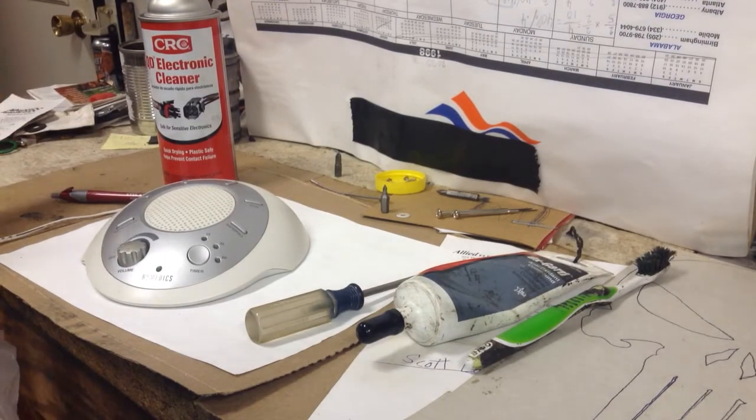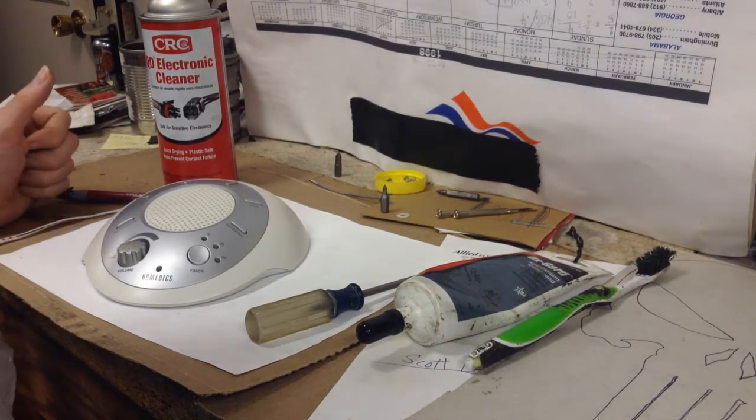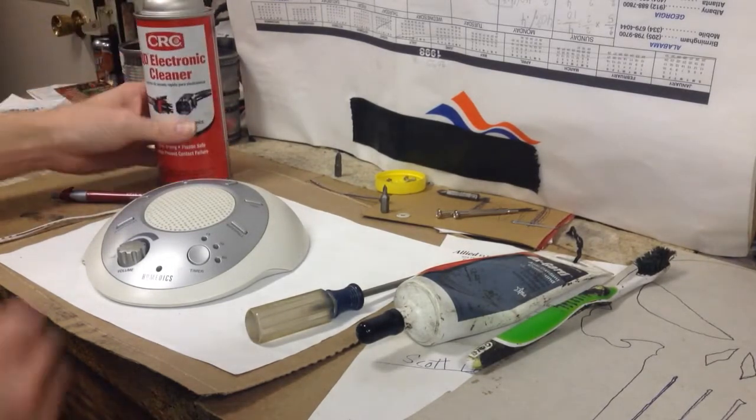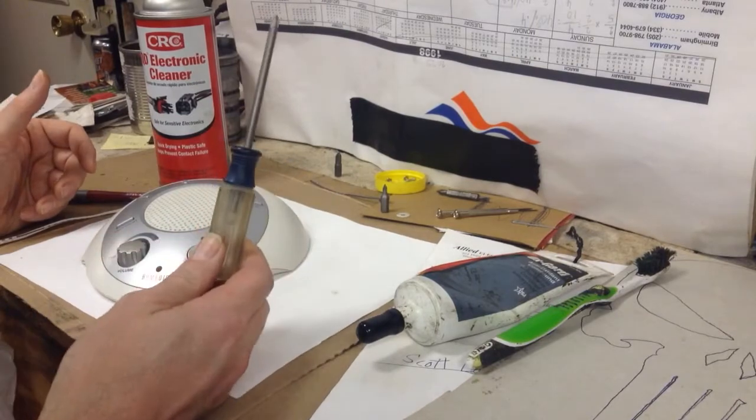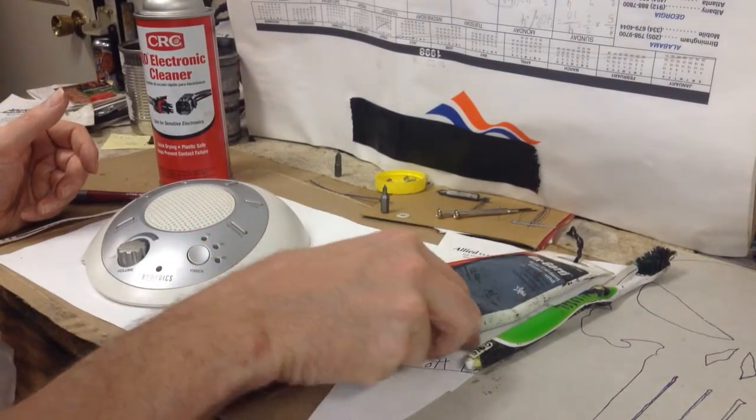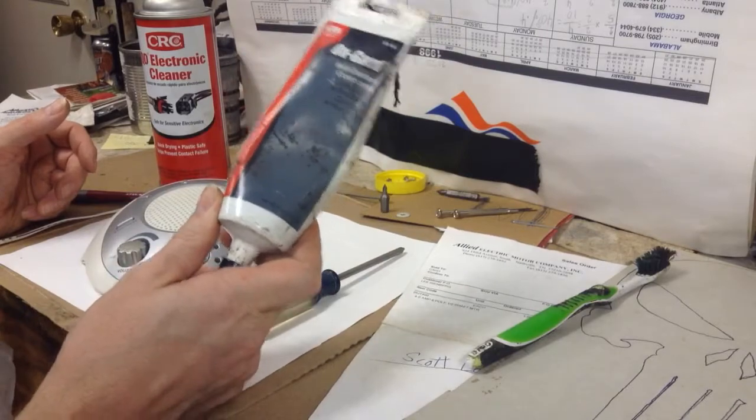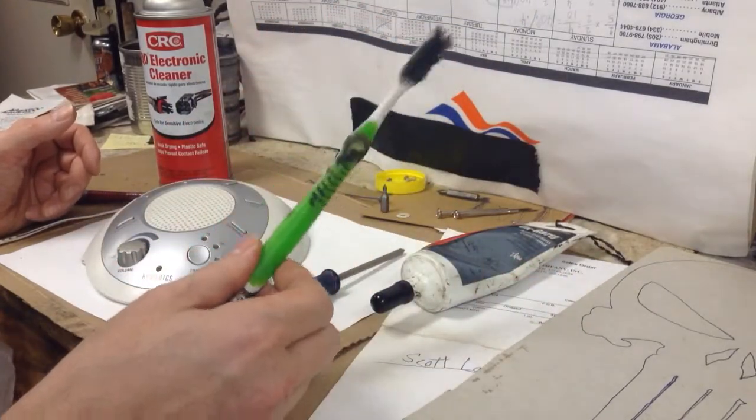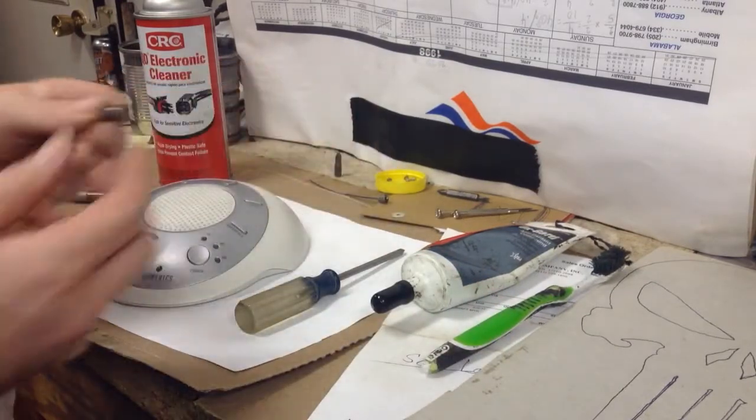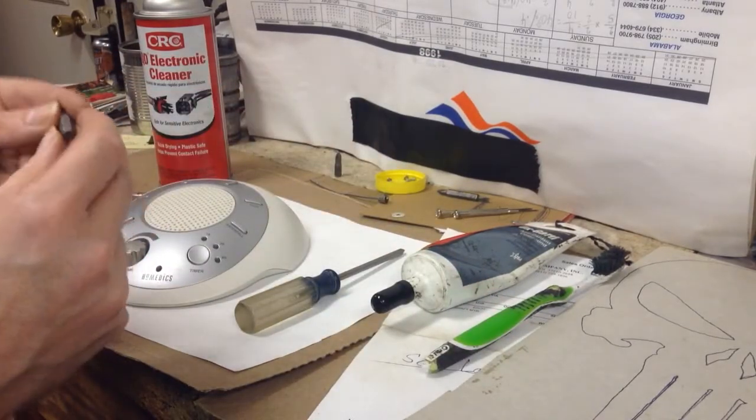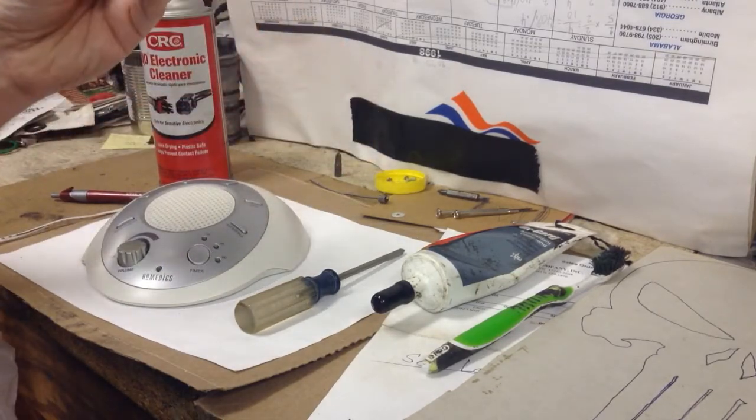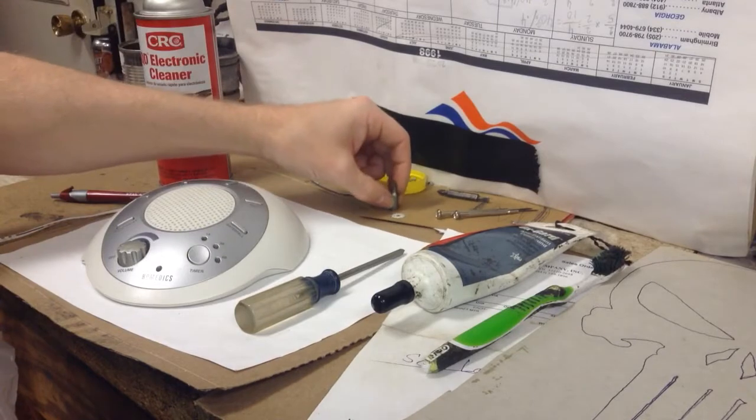All you need is some electronic cleaner, a number one Phillips head screwdriver, some ox guard electrical grease from Home Depot or eBay, one or two toothbrushes, and also a number zero Phillips bit or PZ, PZ 0.0, very small.